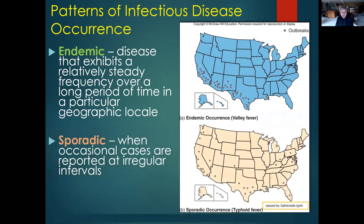A sporadic infection is a pattern that is random — occasional cases popping up at irregular intervals. Typhoid fever caused by salmonella is used as an example. It's scattered and spread somewhat sporadically; if you took another snapshot at a different time, the geographic distribution of cases would likely look completely different.